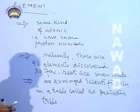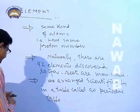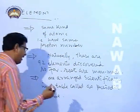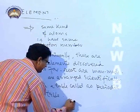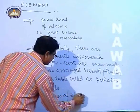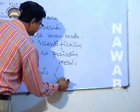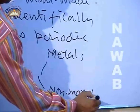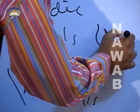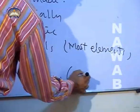We have a separate chapter on the periodic table where the elements present are discussed in detail. Elements are divided into two types mainly: metals and non-metals. Most elements in the periodic table are metals, and some are non-metals.